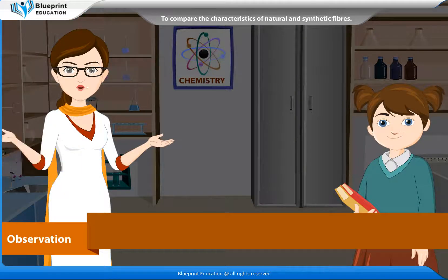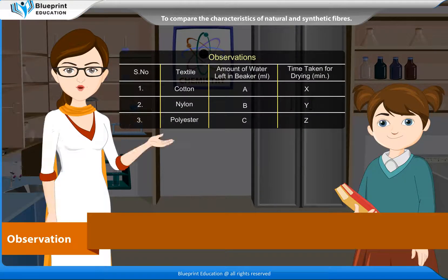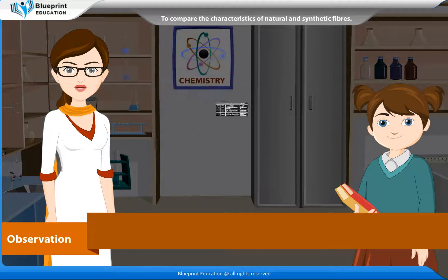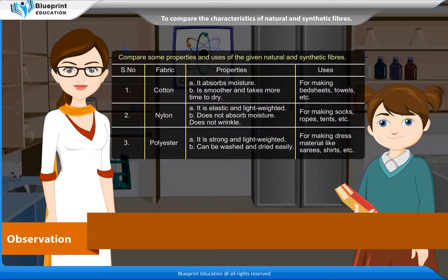Observation table — Serial number, Textile, Amount of water left in beaker, Time taken for drying. 1. Cotton, 2. Nylon, 3. Polyester. Compare some properties and uses of the given natural and synthetic fibers.